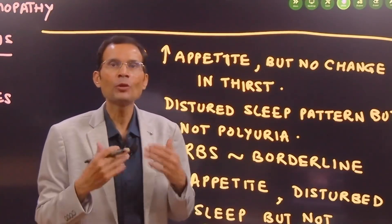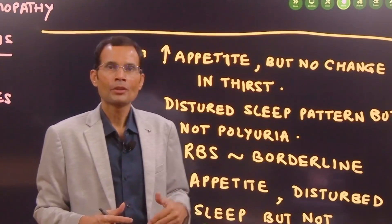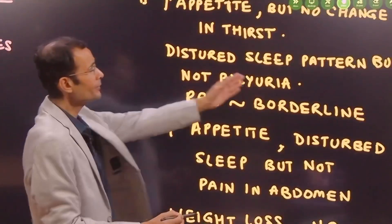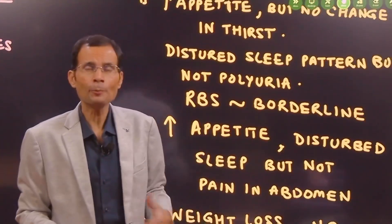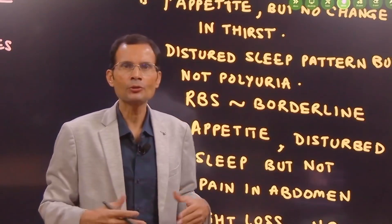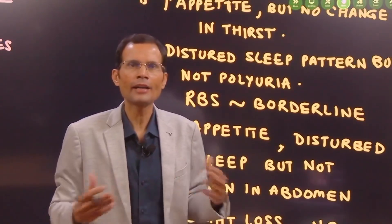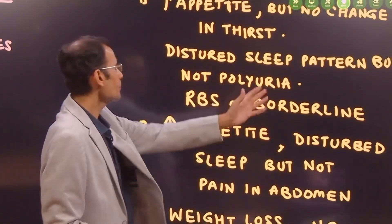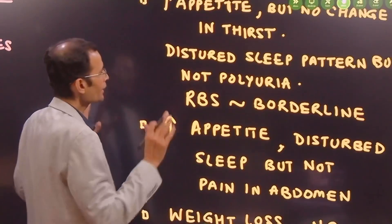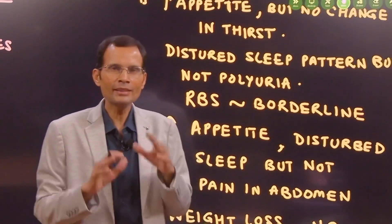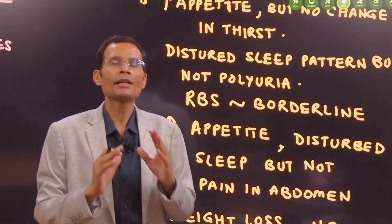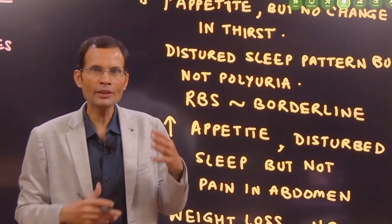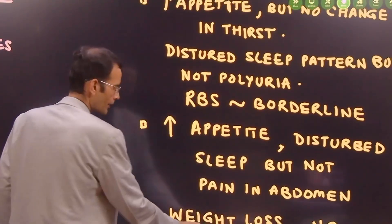Polyphagia, excessive appetite, increased appetite. That is there. But there is no increased thirst. There is disturbed sleep pattern, but not because of the polyuria. Patient is not complaining that he has to get up four or five times through the night. That is not the cause of his disturbed sleep pattern. And random blood sugar is borderline. So looking at all of this picture, it does not appear to be a case of type 2 diabetes mellitus.